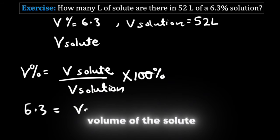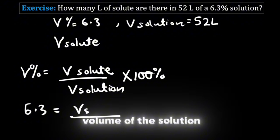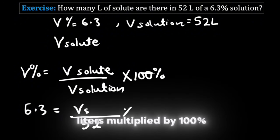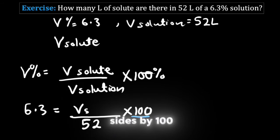This will be equal to the volume of the solute, which we are looking for, divided by the volume of the solution, which is 52 liters, multiplied by 100%. Now divide both sides by a hundred.